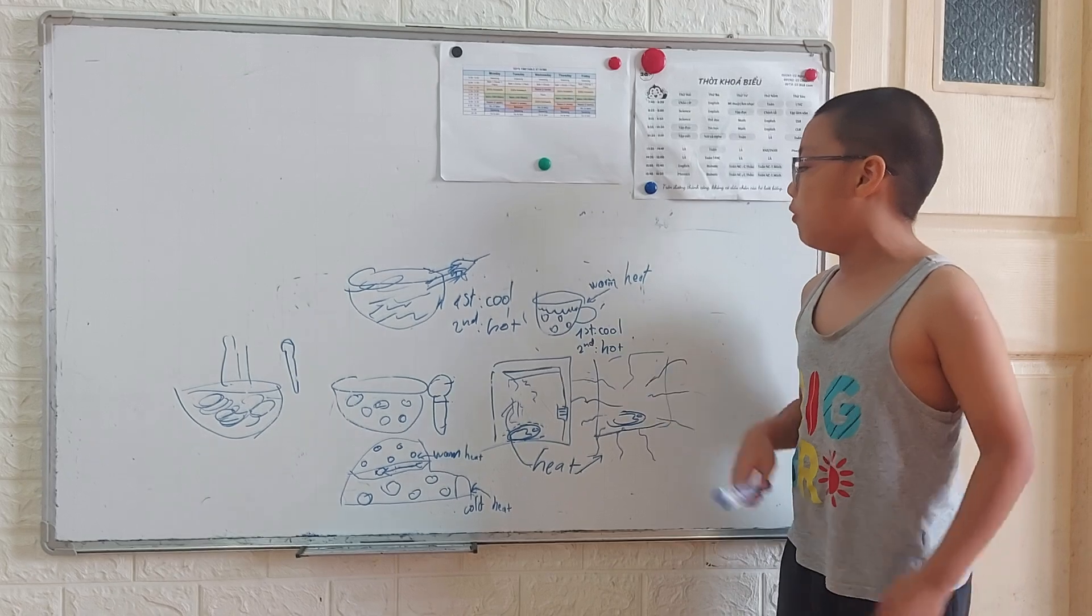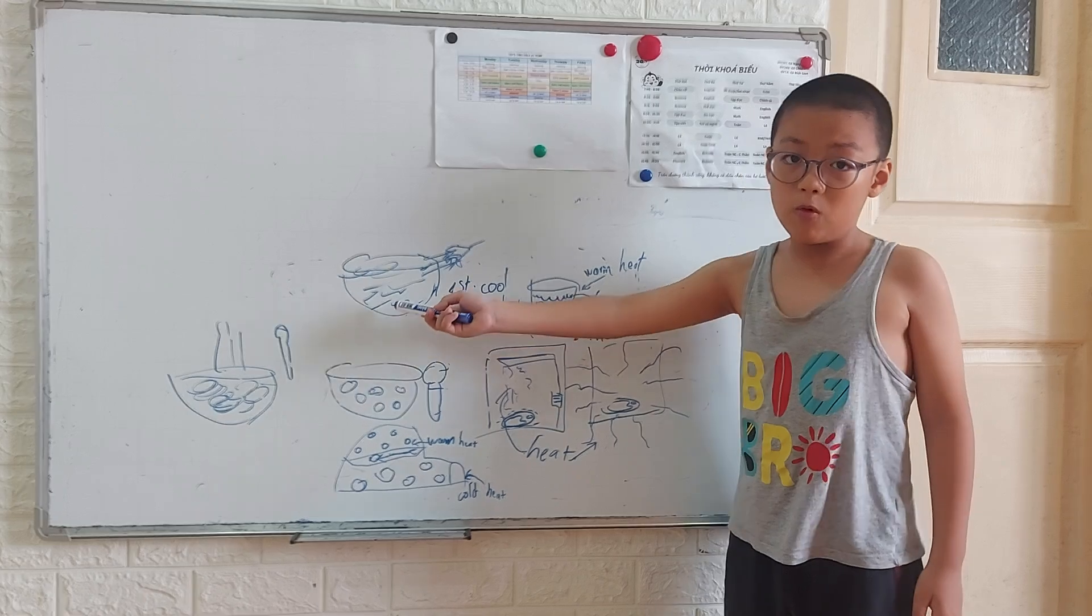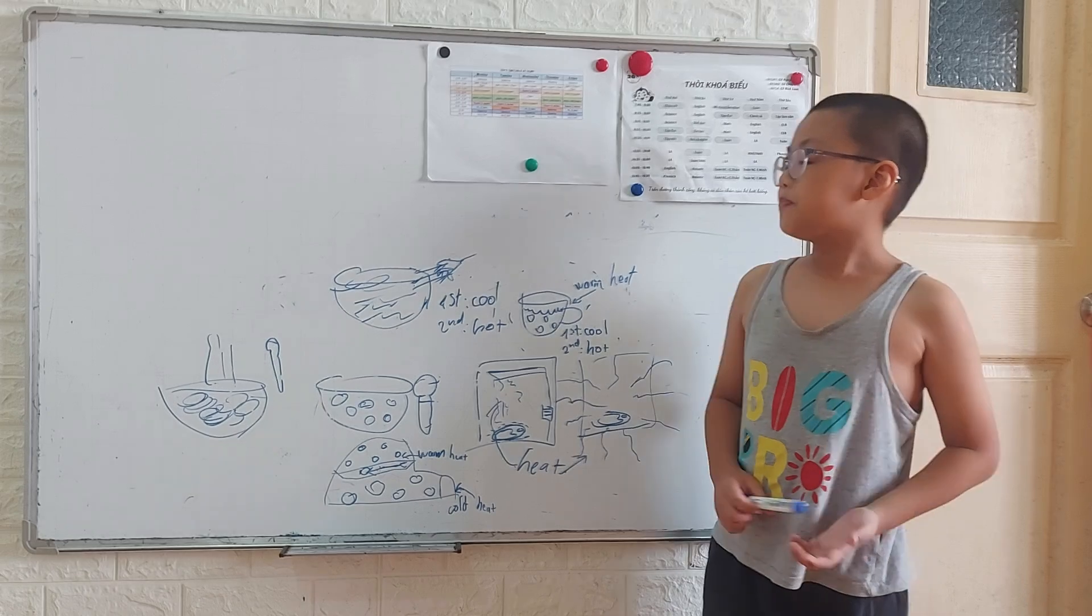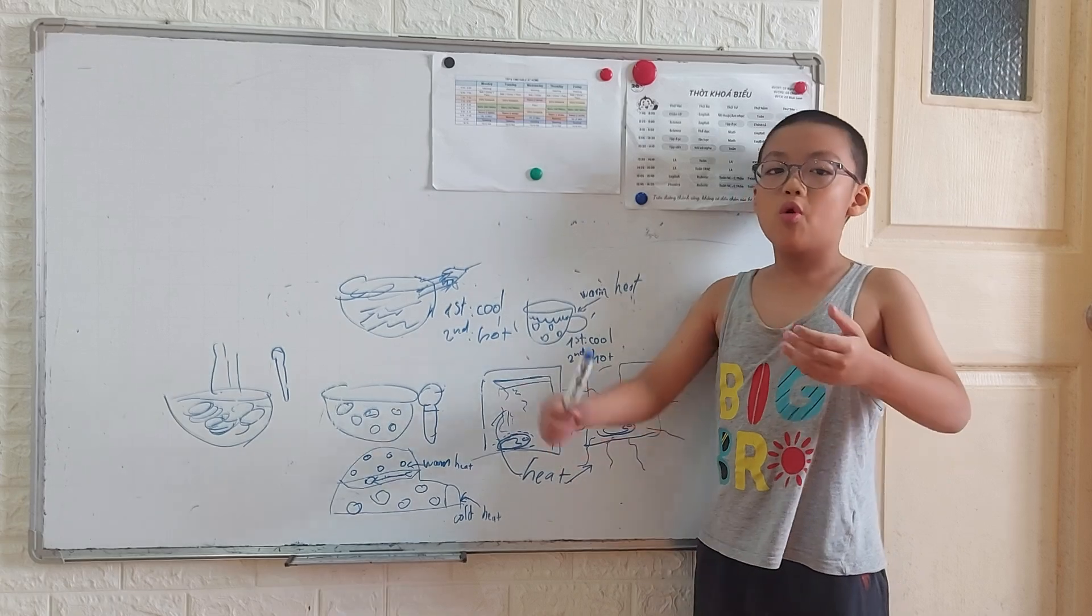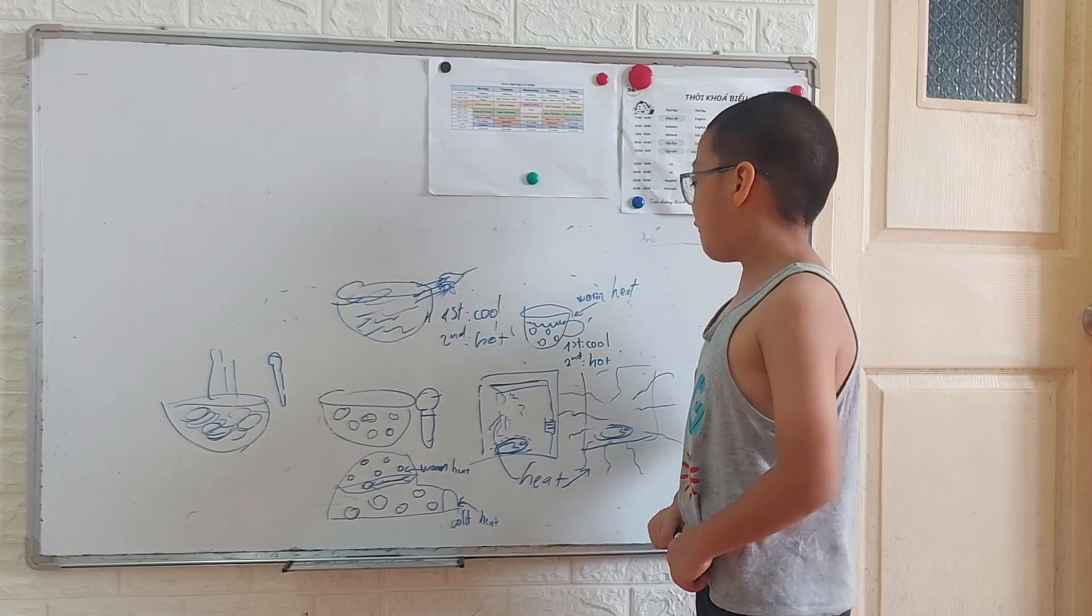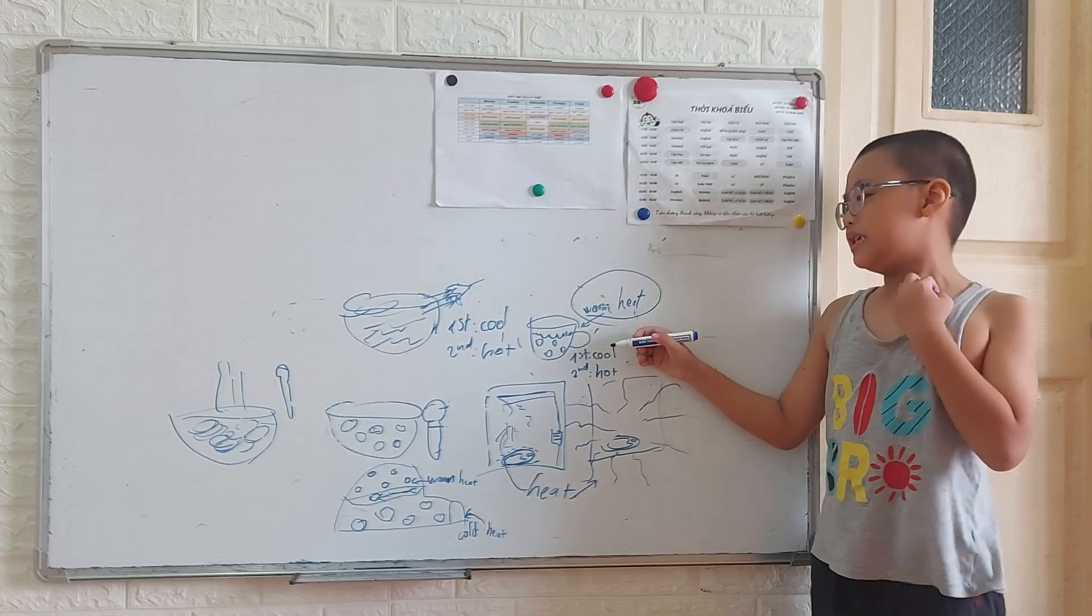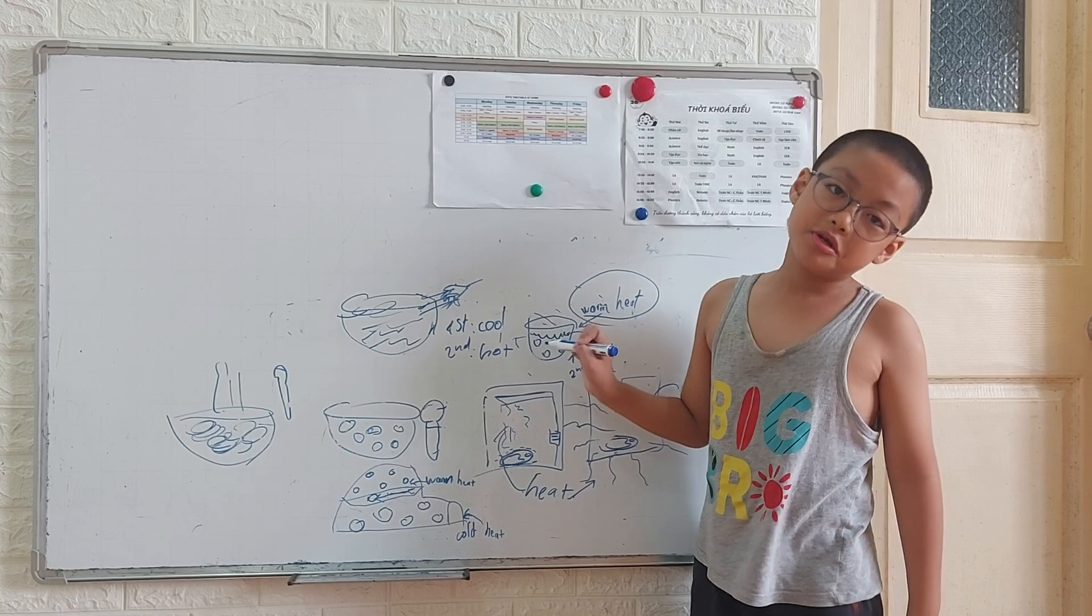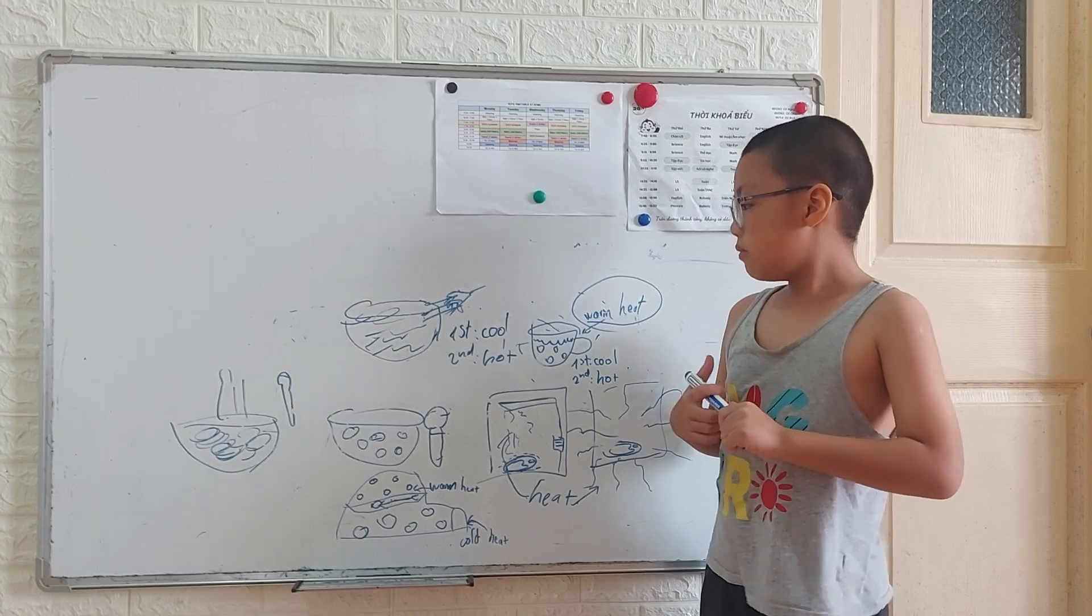For example, this is the cup, a mug. First, it is very cool. No hot, no cold, just fine. But then, you start to pour hot coffee inside. So, the coffee is hot, which has warm heat. So, the hot warm heat transports to this mug, making it hot.